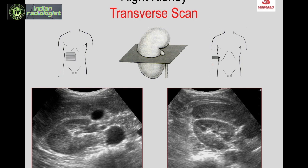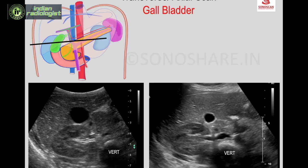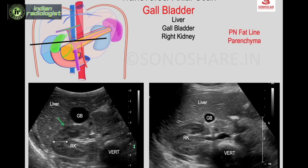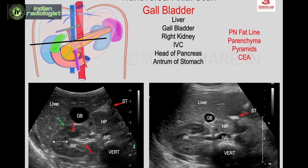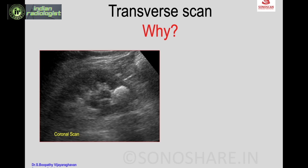Moving to the transverse scan: as mentioned, it can be taken from the anterior aspect or from the flank. From the flank you get the transverse scan of the same kidney. Once you see the transverse scan, you see the liver, the gallbladder, and the right kidney with the perinephric fat line, parenchyma, pyramids, and the central echogenic area extending continuously with the retroperitoneal echogenic area. The inferior vena cava, head of pancreas, and the antrum of the duodenum are structures in relation to the right kidney.